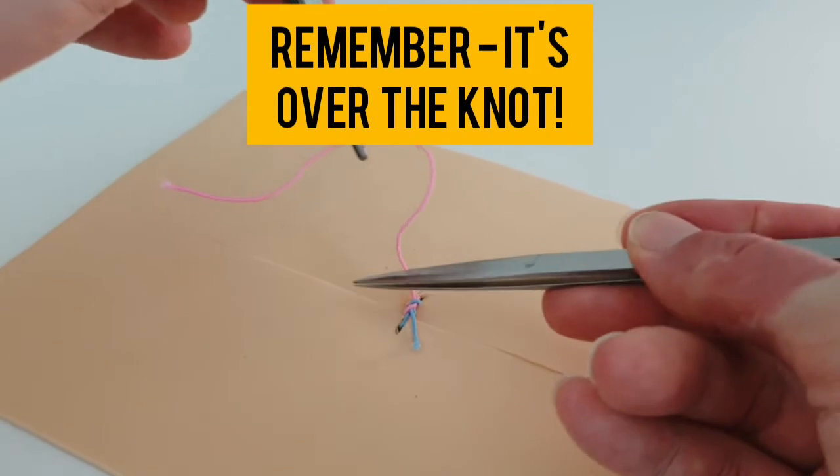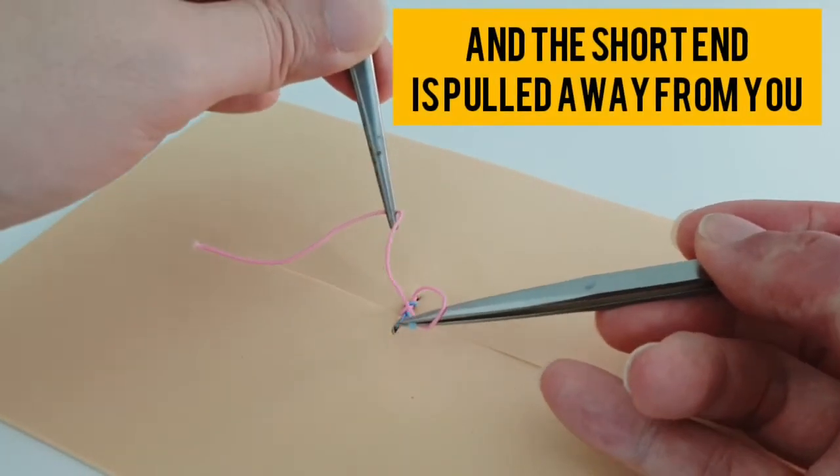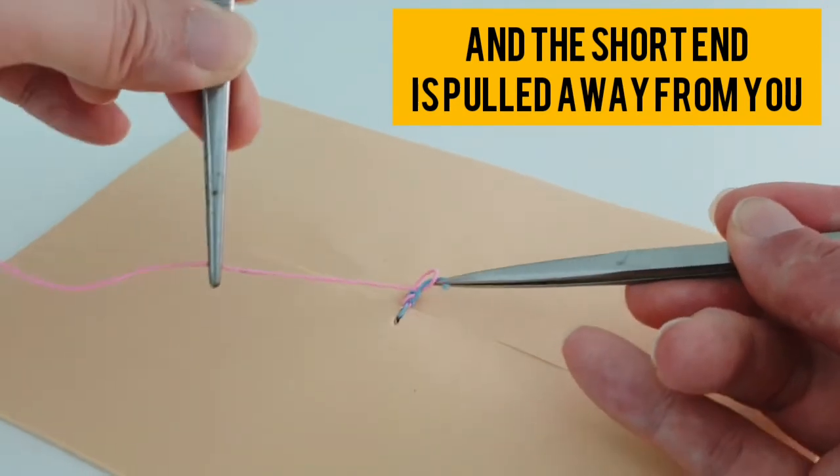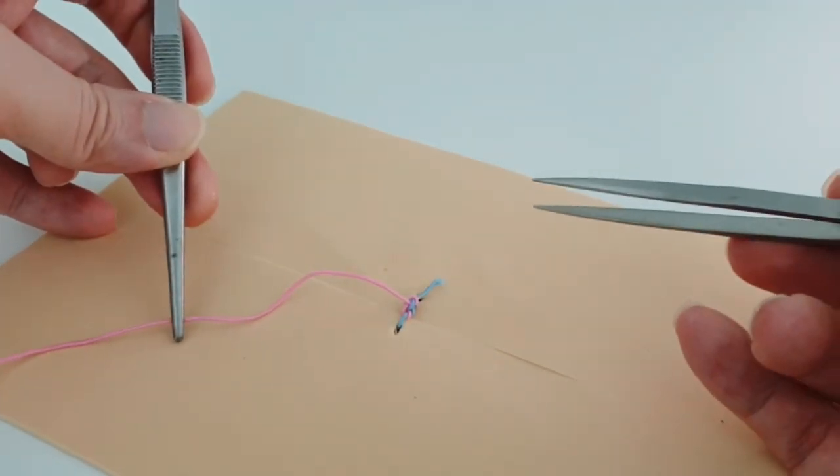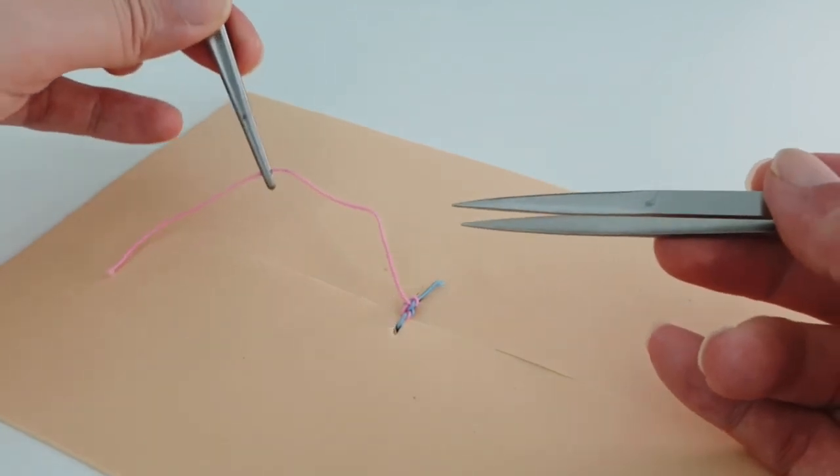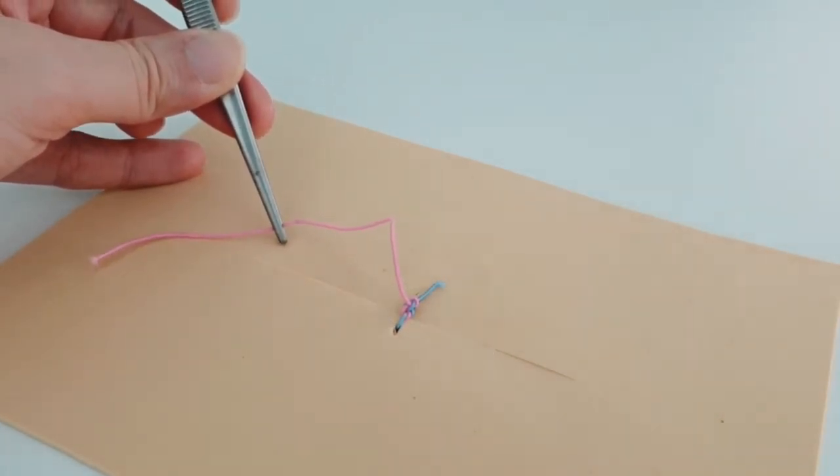The third throw, again, over the knot. And your short end that was next to you, you're now going to pull it away from you. And that's how you're going to tie your suture when it's backhand.